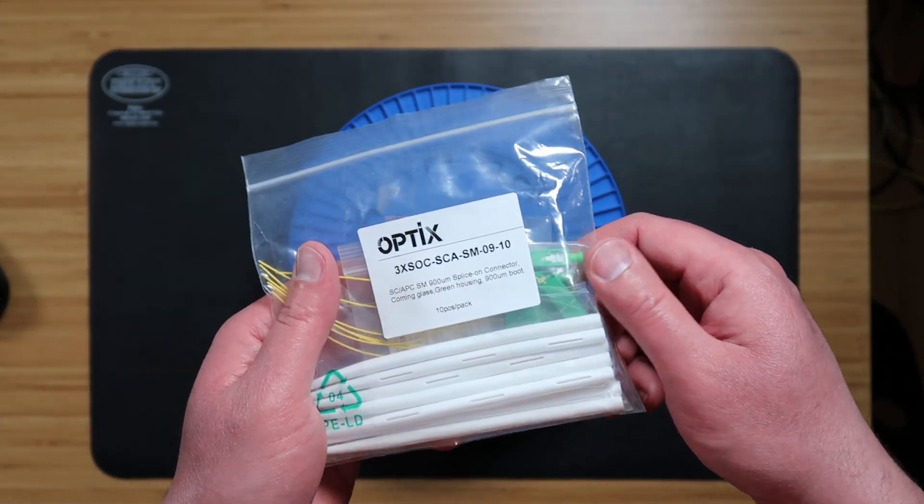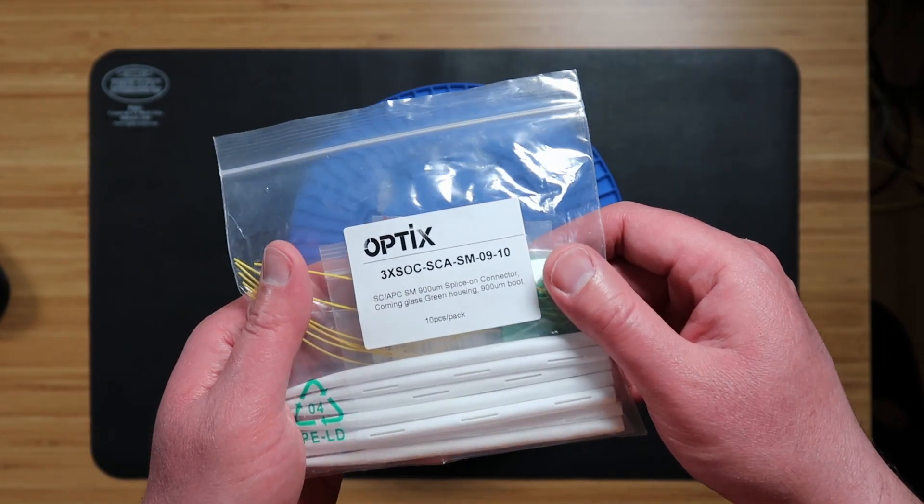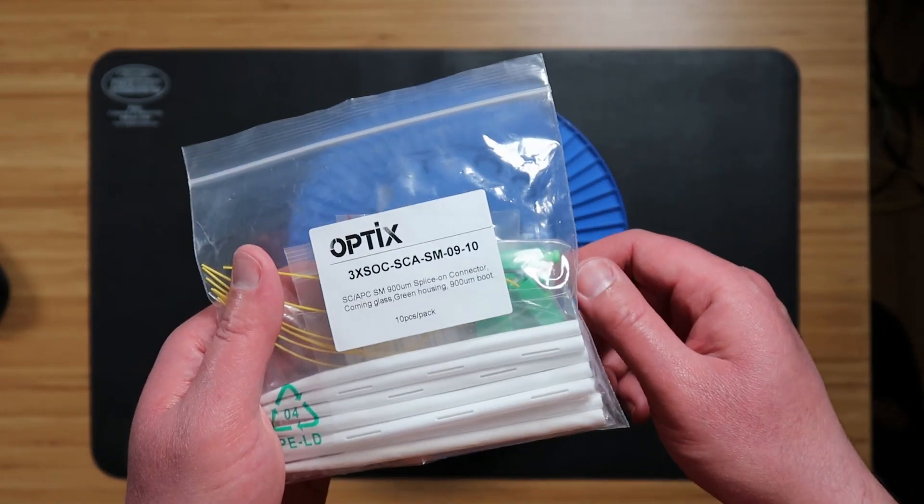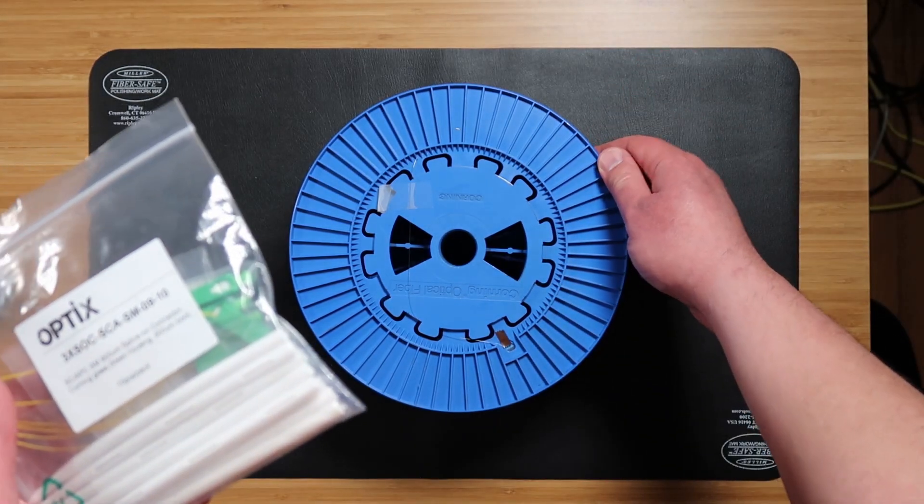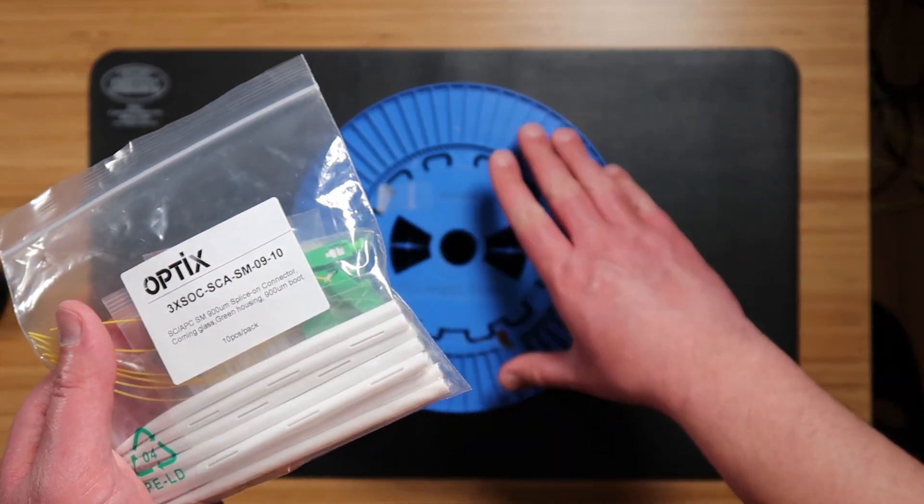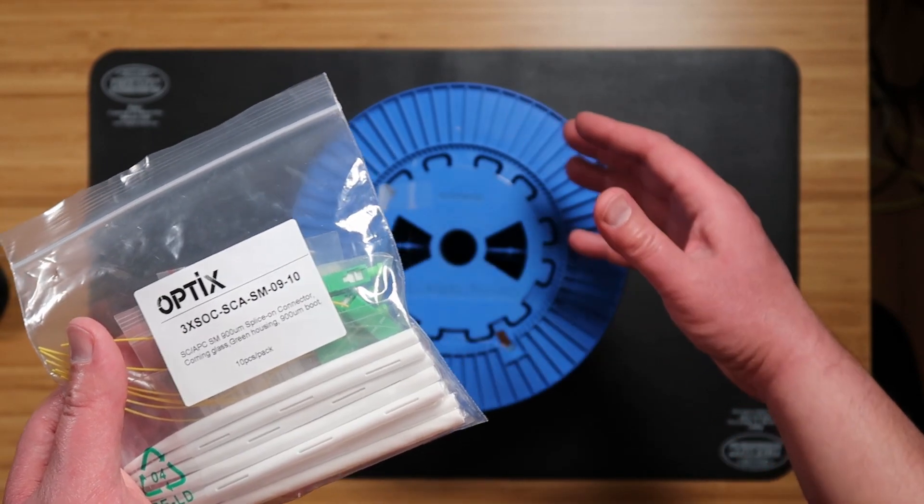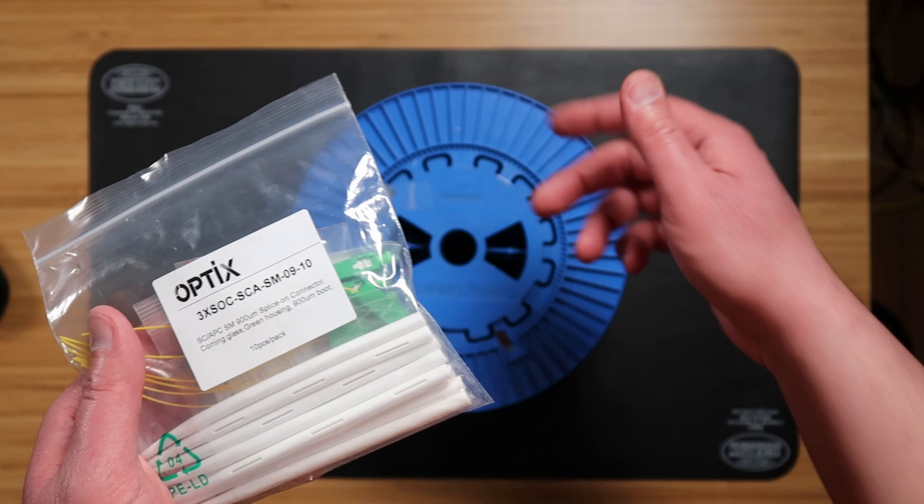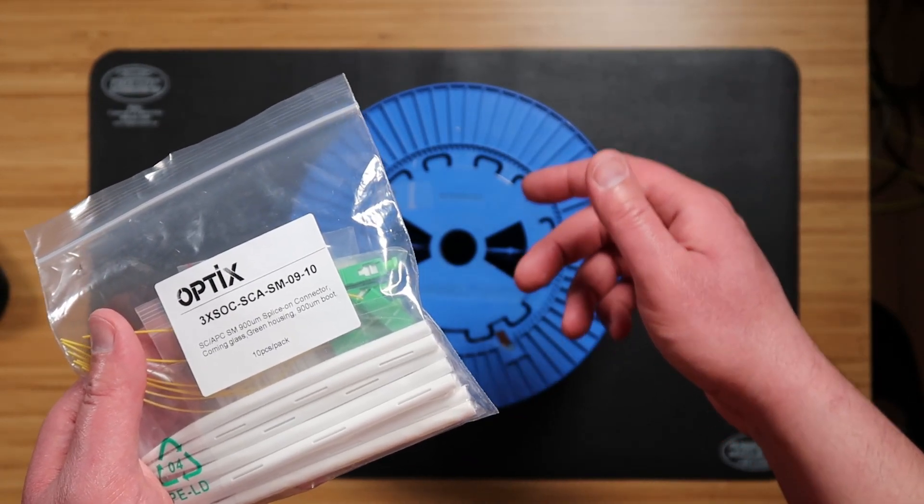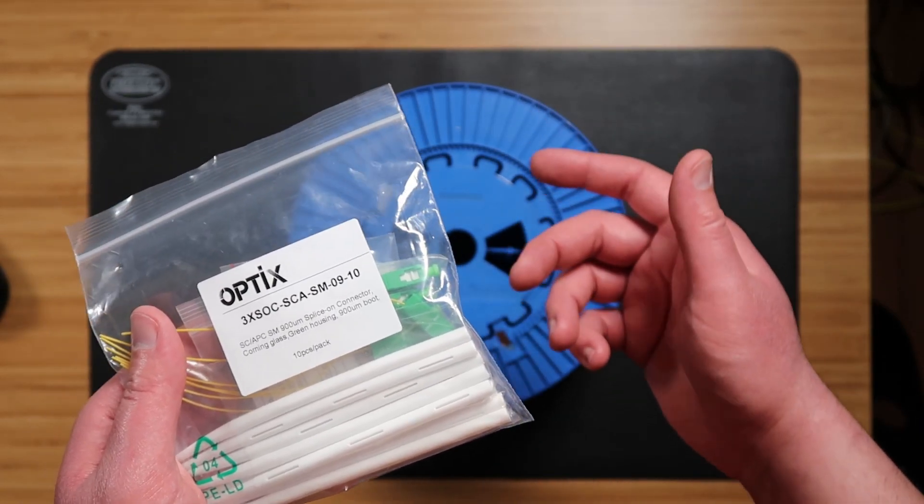For each spool, we will be terminating an Optix 3x reusable SC-APC splice-on connector for both ends of the fiber. We prefer to use splice-on connectors for fiber spools instead of pigtails because the splices are better protected inside the splice-on connector instead of exposed on the perimeter of the spool like in some of our pre-terminated spools that we've purchased.